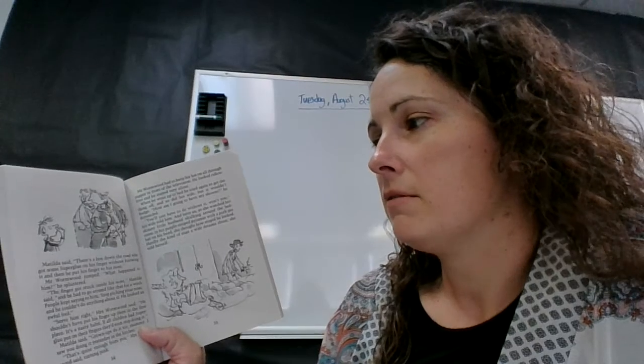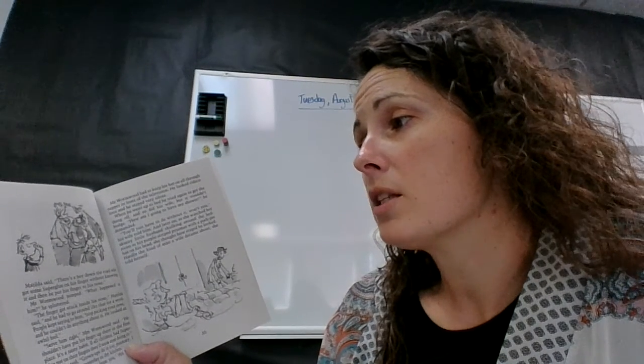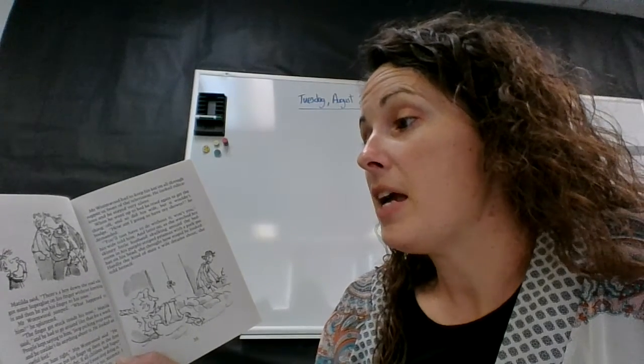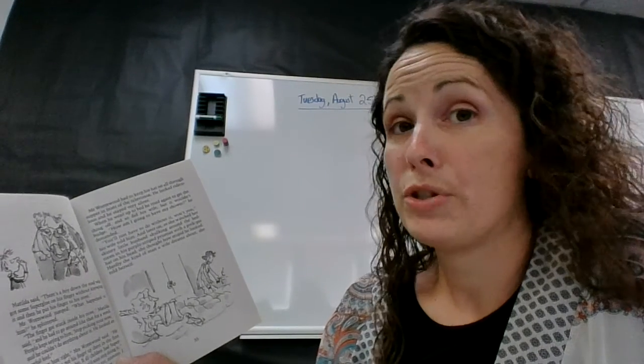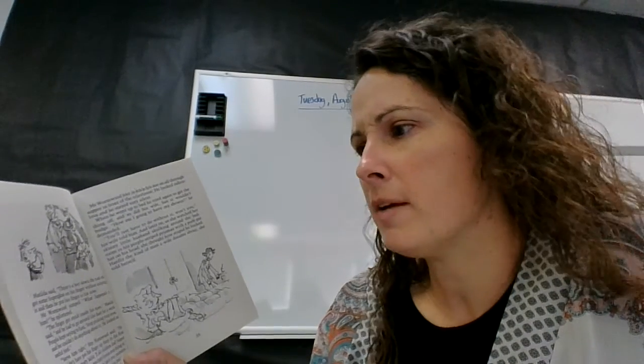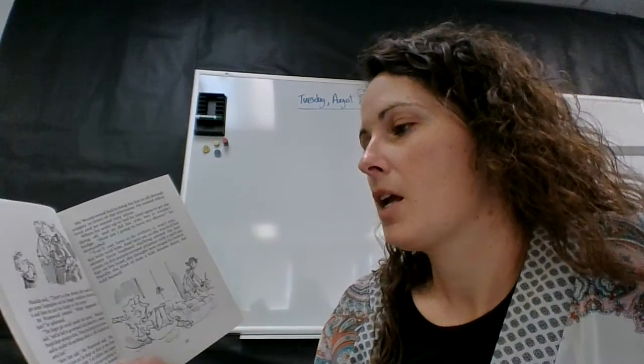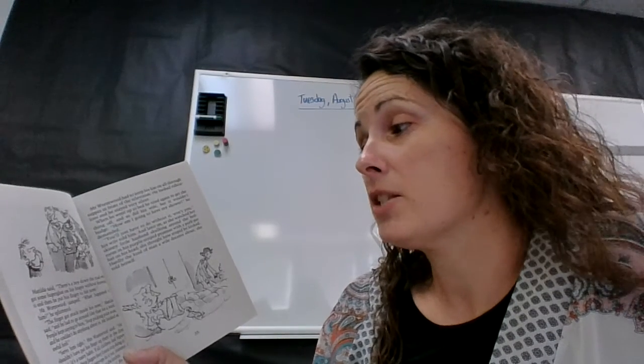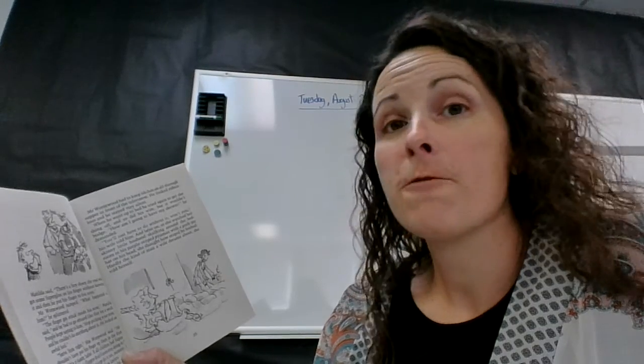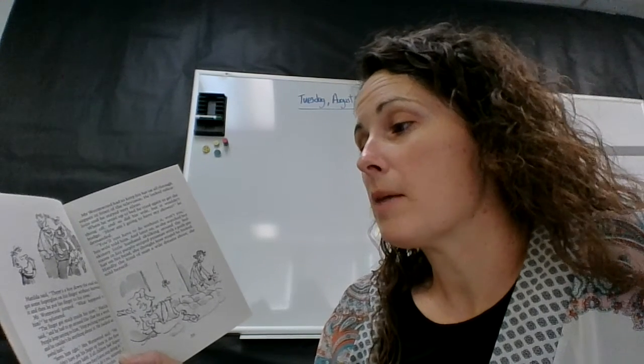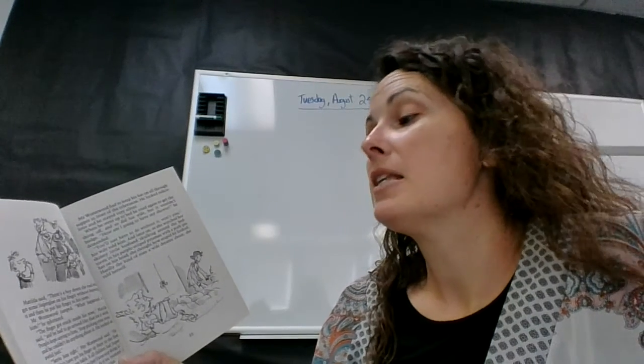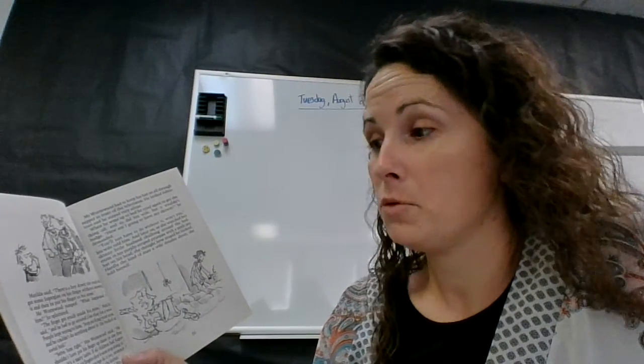Matilda said, There's a boy down the road who got some super glue on his finger without knowing it, and then put his finger to his nose. Mr. Wormwood jumped. What happened to him? He sputtered. The finger got stuck inside his nose, Matilda said, and he had to go around like that for a week. People kept saying to him, Stop picking your nose, and he couldn't do anything about it. He looked an awful fool.